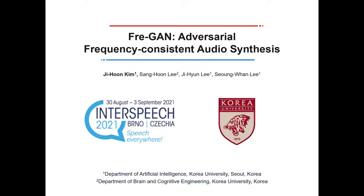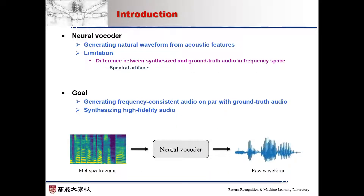Hi, I'm Jihong Kim. Let's begin the presentation. Despite recent advances in neural vocoders, there still exists a gap between generated and ground truth audio in frequency space. This gap leads to spectral artifacts. So the goal of our research is to address the frequency inconsistency problem and improve the sample quality.